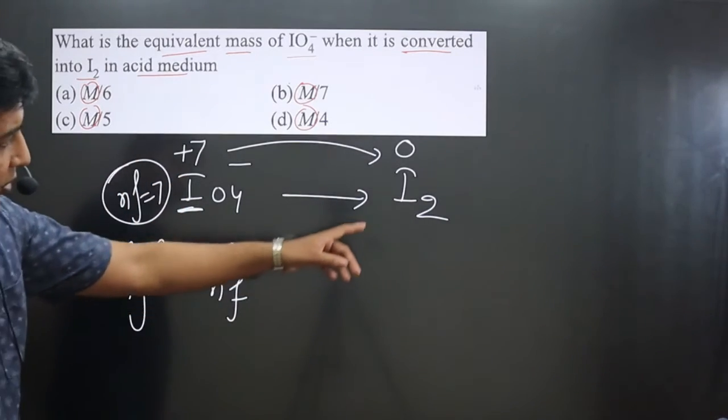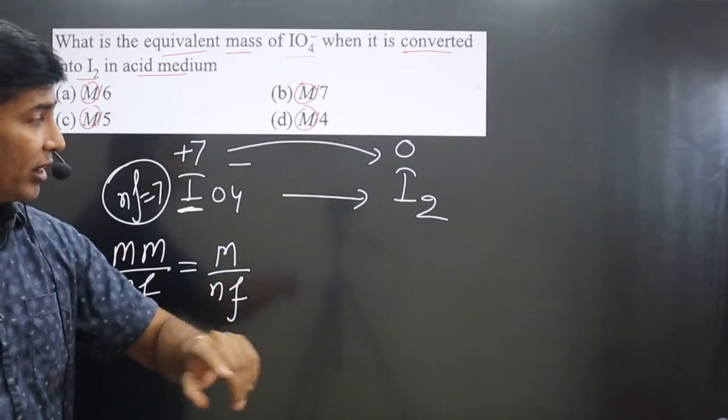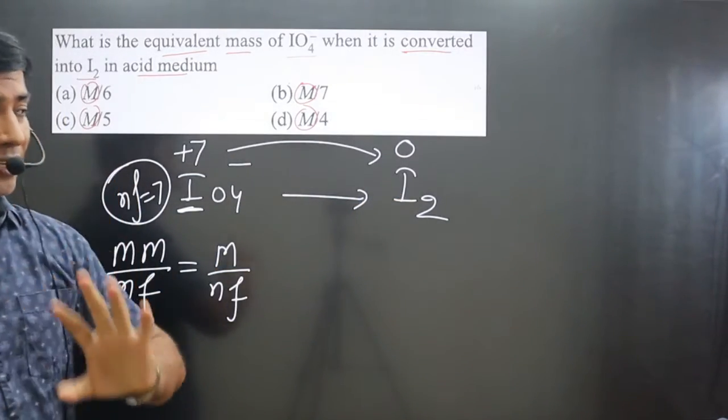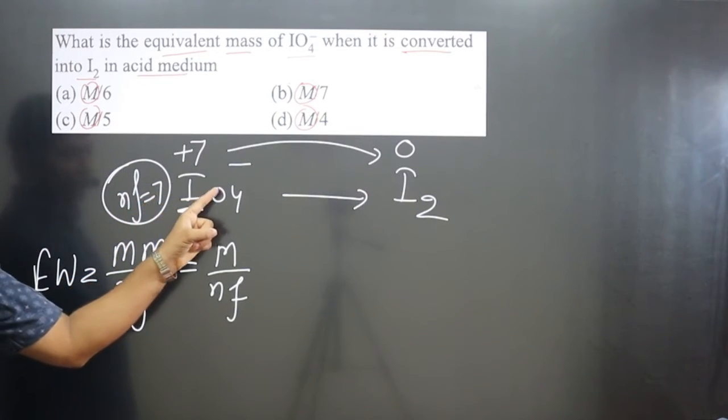Keep in mind, if we calculate the n-factor for the I₂ molecule, it would be 14, because there are two iodine atoms in the I₂ molecule. The n-factor for IO₄⁻ is